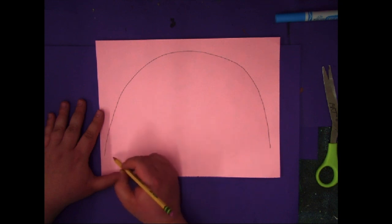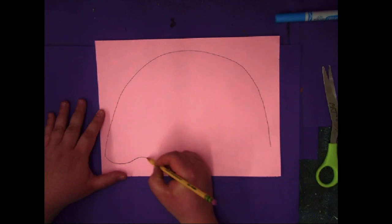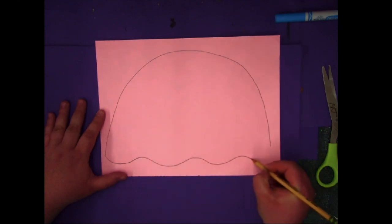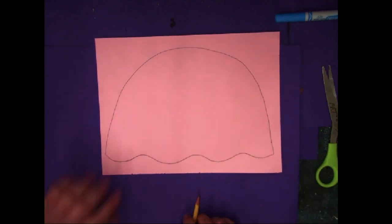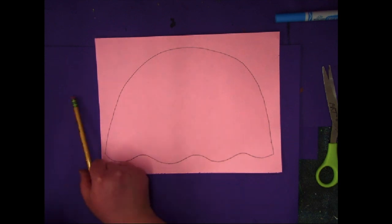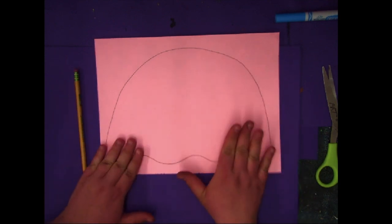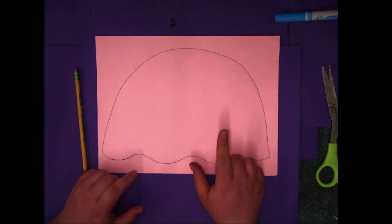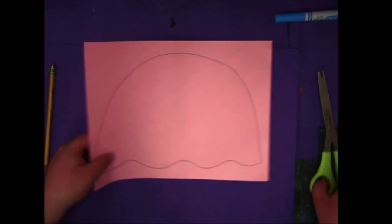Now for the bottom of the jellyfish, we're going to do kind of a wavy line. So I'm going to make a wave, not really bumpy, just a little bit bumpy. And then what I'm going to do is I'm going to cut this out. So use your strategies, do the best you can on cutting it out.